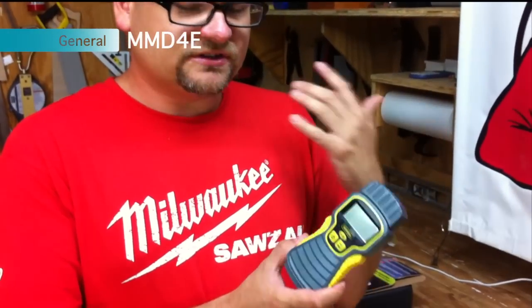What's up everyone? It's Dan with Tools in Action. Today we're going over the General Instruments DDM-4E. It's a moisture meter for building materials and wood.